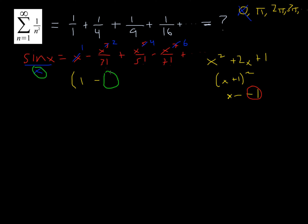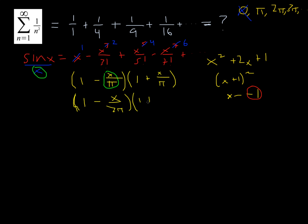So the root of the first factor is going to be x over pi. The reason is, if we plug in pi for x, this fraction equals 1, and 1 minus 1 equals 0, making the whole thing 0. The next factor is 1 plus x over pi, because negative pi also makes sine of x equal to 0 — you can go clockwise on a unit circle. So continuing: 1 minus x over 2 pi, times 1 plus x over 2 pi, then 1 minus x over 3 pi, 1 plus x over 3 pi, and so on — an infinite number of factors.